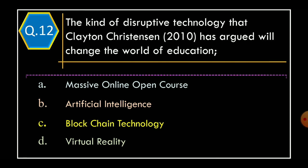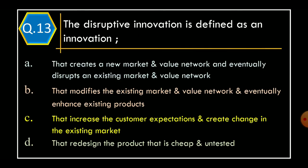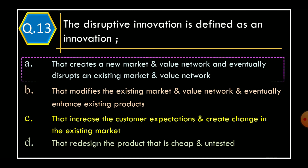Question 13. Disruptive innovation is defined as an innovation: Option A: That creates a new market and value network and eventually disrupts an existing market and value network. Option B: That modifies the existing market and value network and eventually enhances existing products. Option C: That increases customer expectations and creates change in the existing market. Option D: That redesigns the product so it is cheap and untested. The correct option is Option A: That creates a new market and value network and eventually disrupts an existing market and value network.